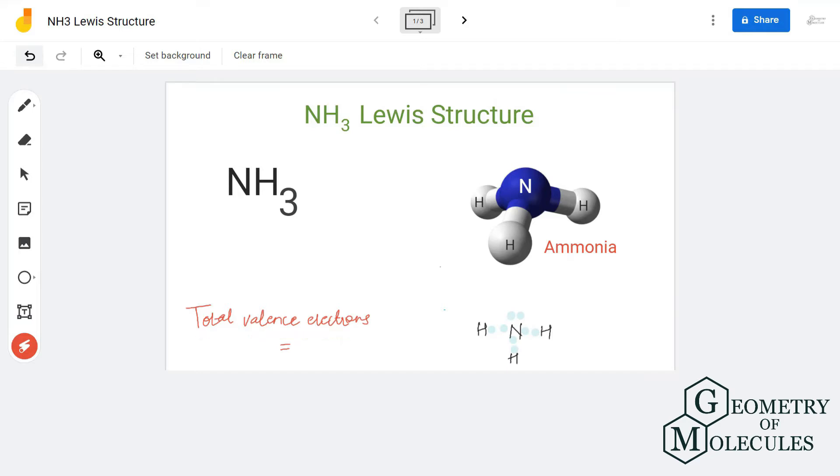Ammonia has one atom of nitrogen and three atoms of hydrogen. To know the Lewis structure of ammonia, we will first calculate the total number of valence electrons in NH3. Nitrogen is a group 15 element and has five valence electrons.